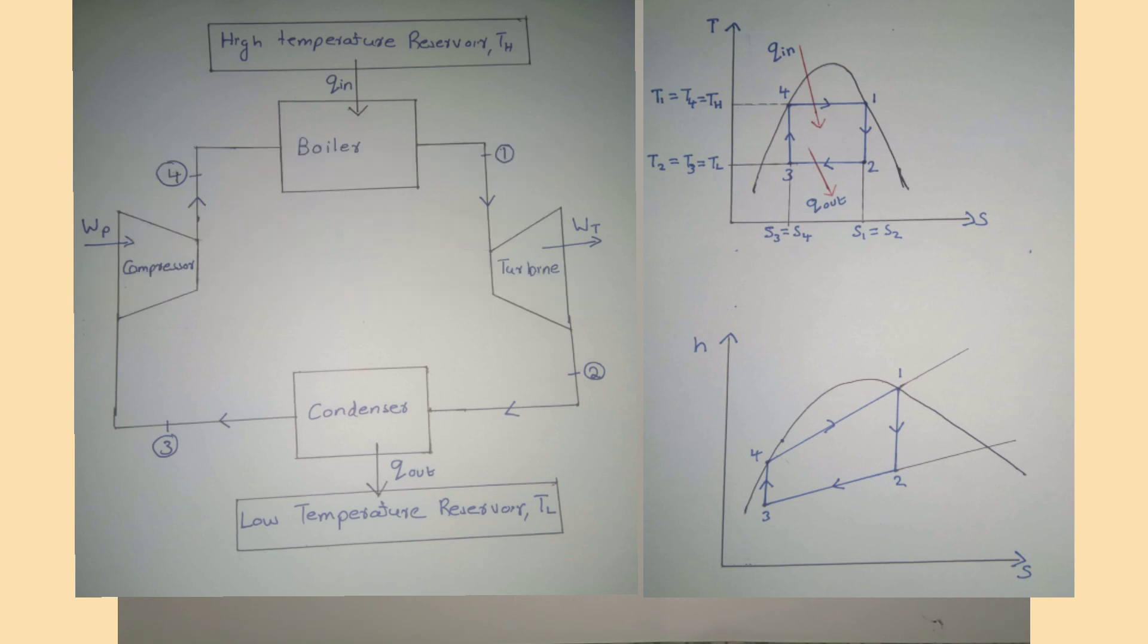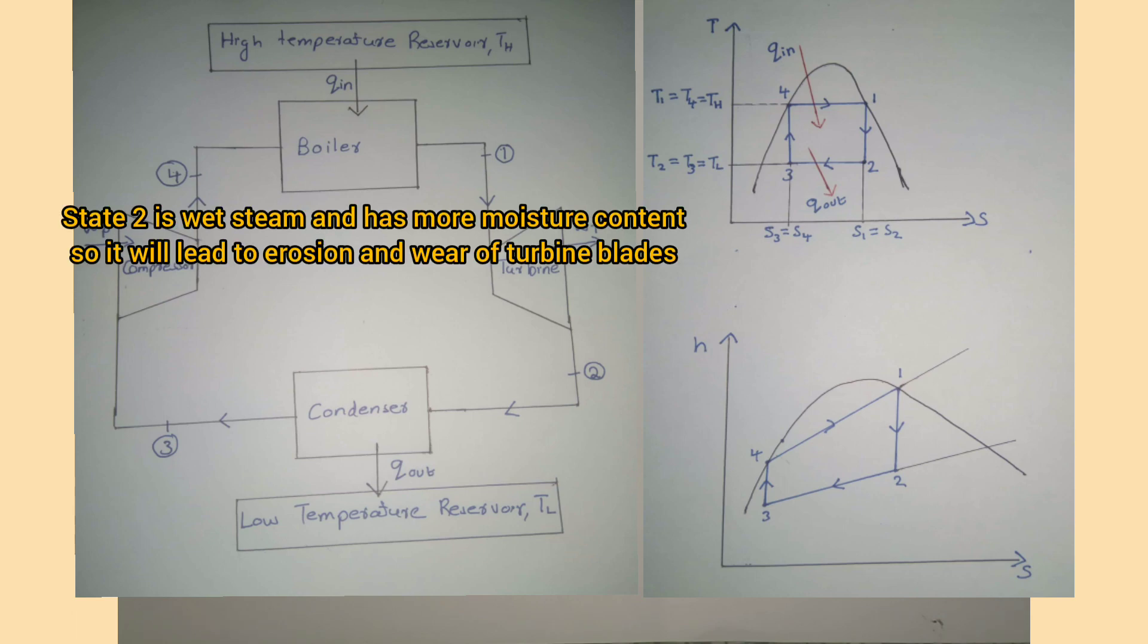I already said that the Carnot cycle is a theoretical cycle, and it has some practical difficulties. After expansion from the turbine, state 2 is wet steam. It has high moisture content and will lead to erosion and wear of the turbine blades.